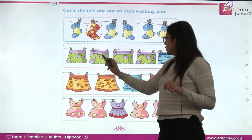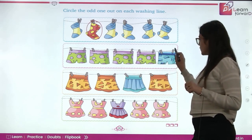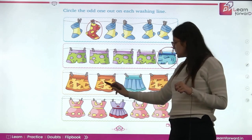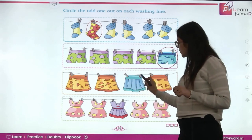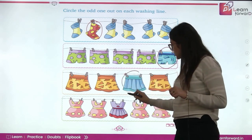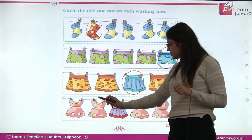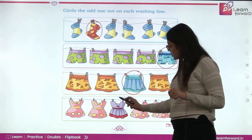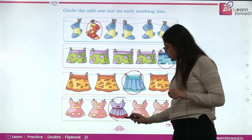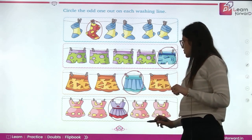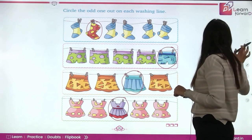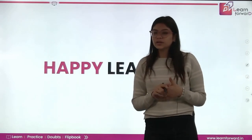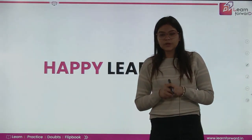Now, which is the different? This one is different — circle this. Another one: the skirt of this color is totally different, so circle this out. And these are the frogs. This one is totally different from the others, so we have to circle this out. This was about patterns. I hope it is very clear to you. Thank you so much. Happy learning. Thank you.